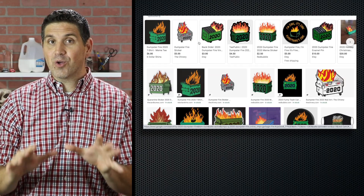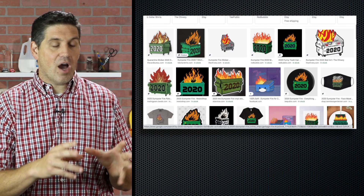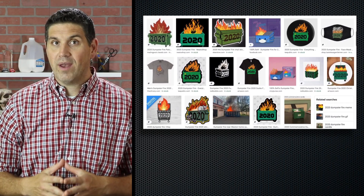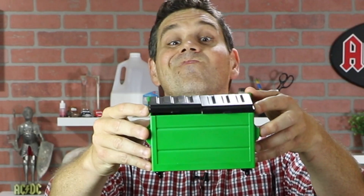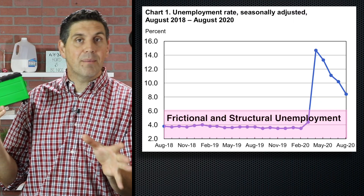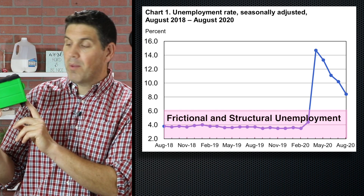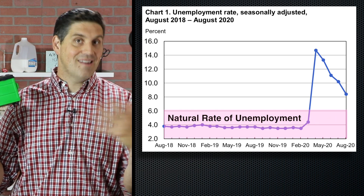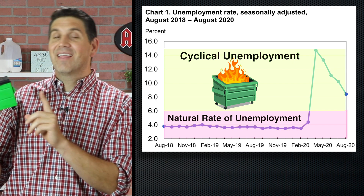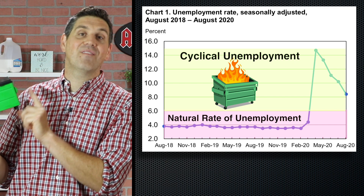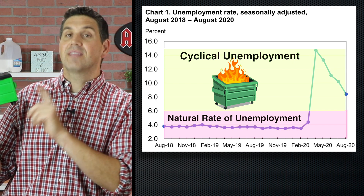Here's something to help you remember frictional, structural, and cyclical unemployment. A quick search on the internet will show you there's kind of an unofficial icon or symbol of 2020 — it's a dumpster fire. To help you remember these concepts, I have for you a dumpster. Unemployment is like a dumpster: it's just a fact of life, it's ugly, and it's always there. Sometimes people are going to get canned. So having a dumpster around — like frictional and structural unemployment — it's totally normal, it's natural. But a dumpster fire, that's something different, and that's what we have here in 2020: cyclical unemployment.